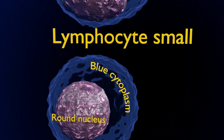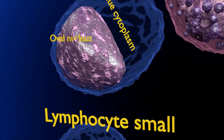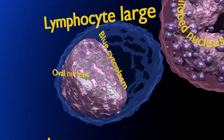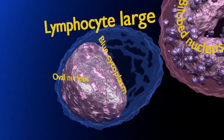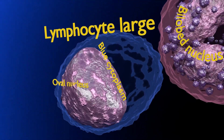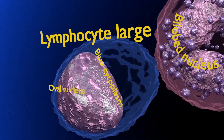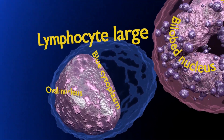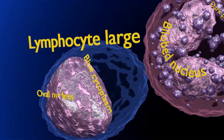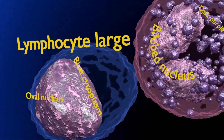The large lymphocyte is a mononuclear cell with an oval nucleus and abundant basophilic cytoplasm. Lymphocytes include natural killer cells, T cells, and B cells. An increase in lymphocyte concentration is usually a sign of a viral infection, whereas a low absolute lymphocyte concentration is associated with increased rates of infection after surgery or trauma.